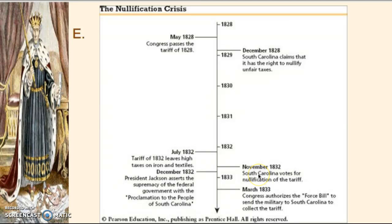Jackson is now president and has to decide: allow South Carolina to nullify the tariff and potentially secede, or exert federal authority? Jackson, typically for the common man and possibly pro-states' rights, does not side with the state here. He sides with the federal government, asserts federal supremacy, threatens to hang John C. Calhoun, and advocates to get the Force Bill passed through Congress, which would allow him to use military force to make South Carolina pay the tariff.